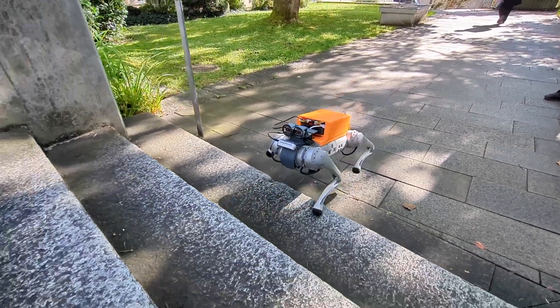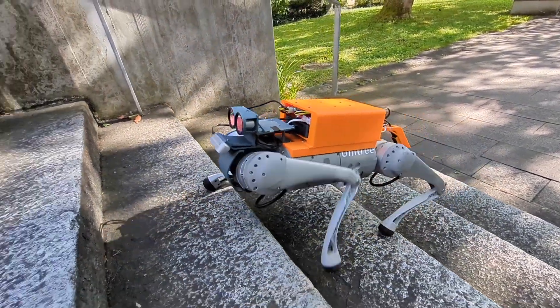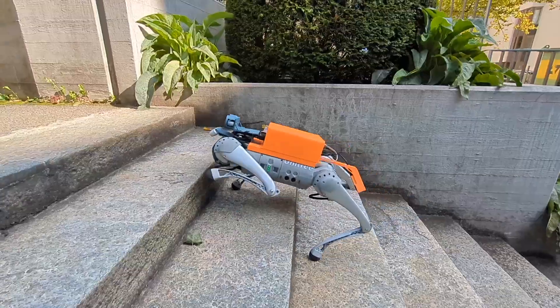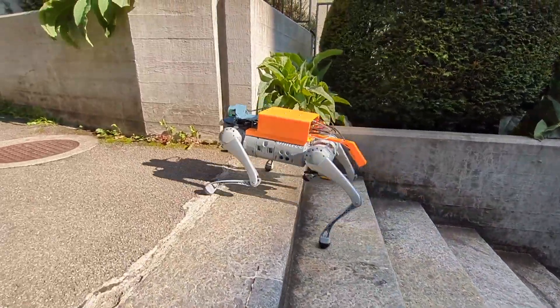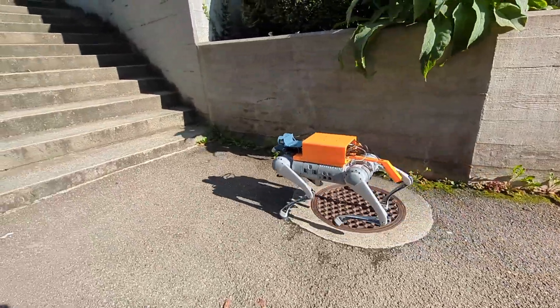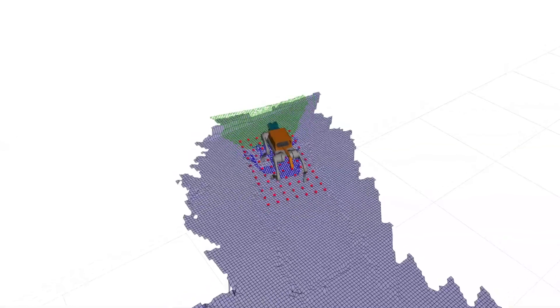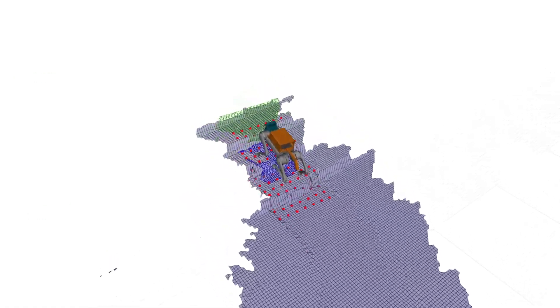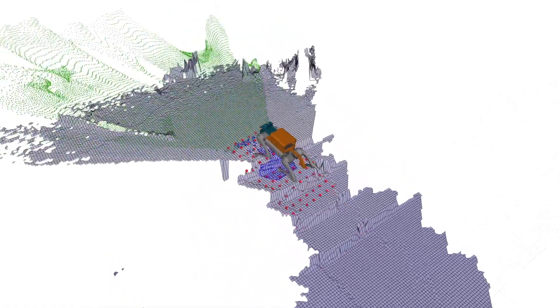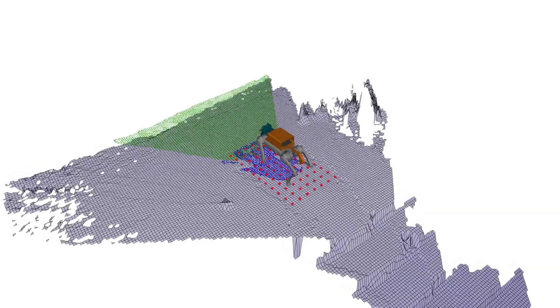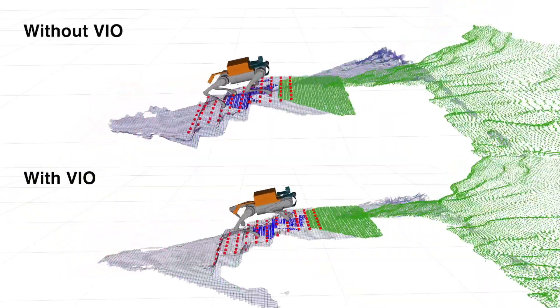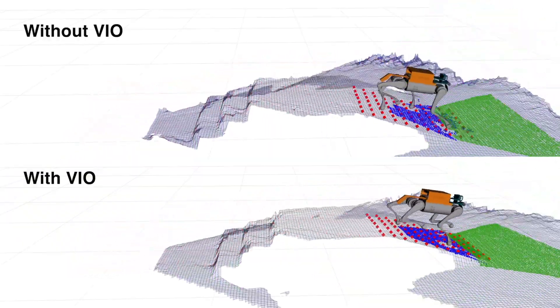The proposed system was validated in real-world experiments demonstrating its capability to traverse uneven terrains such as stairs. Our solution consistently manages to climb steps up to 22.5 cm height, even with the visual inertial odometry estimation disabled. Our trained estimator and additional rear camera are thus adding robustness and giving the option to rely on computationally cheaper estimation algorithms and freeing up resources.